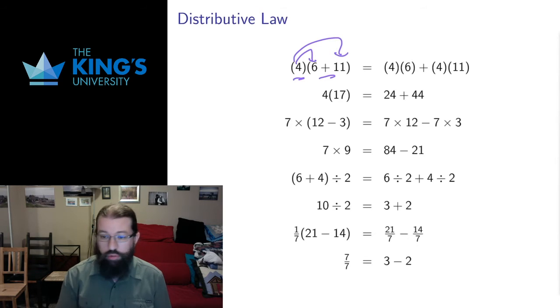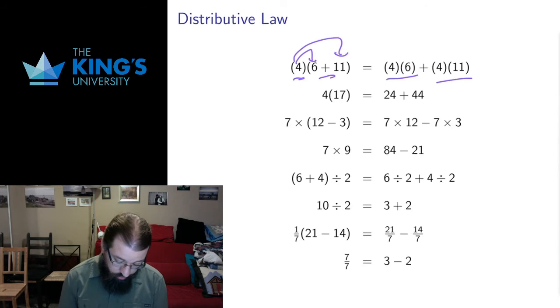So 4 multiplied by 6 plus 11 is the same as 4 multiplied by 6 and 4 multiplied by 11, and you can work that out. And these both work out to 6 plus 11 is 17, 4 times 17 is 68. And again, 4 times 6 is 24, 4 times 11 is 44. Those also add up to 68. Both of these things work.